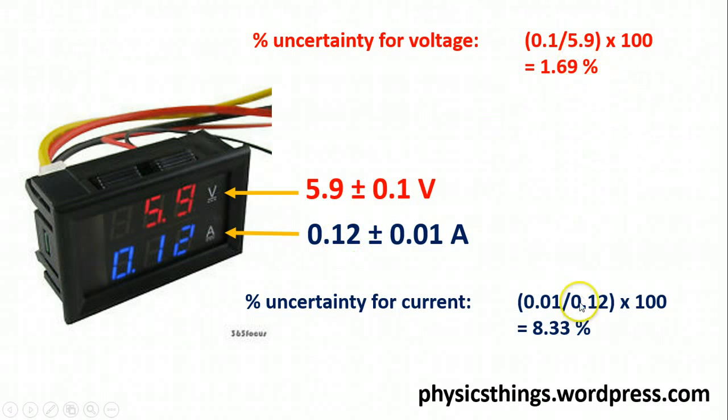Now, instantly, looking at these two values, I can see that the reading on my current and my percentage uncertainty of 8.33%, much higher than 1.69% for the voltmeter. As a result, I can state that my result for the voltage is more reliable than my result for the current.